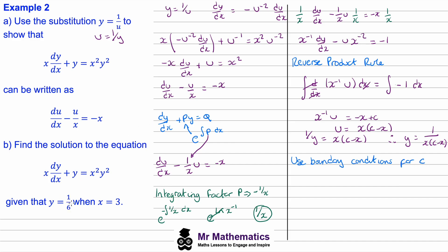We're told y equals 1/6, so 1/6 equals 1 divided by 3(c minus 3). The denominator must equal 6: since 3 times 2 is 6, c must be 5. Substituting back, y equals 1 divided by x(5 minus x), which is our particular solution.